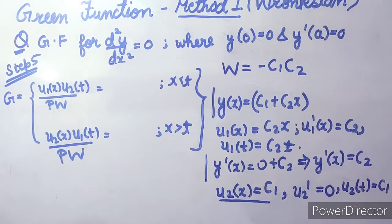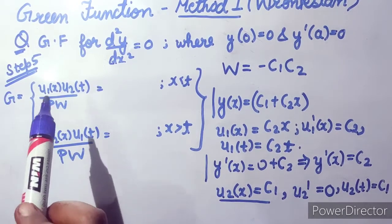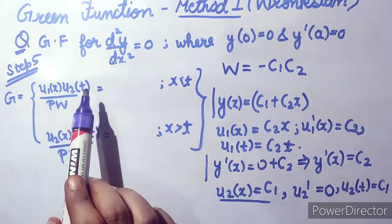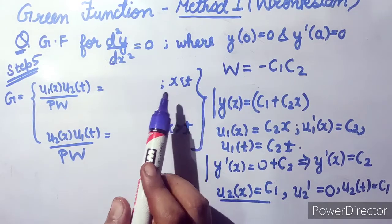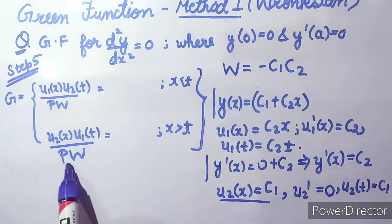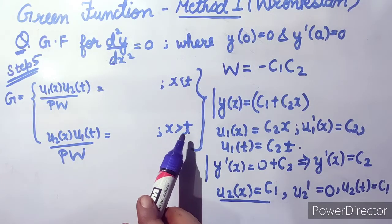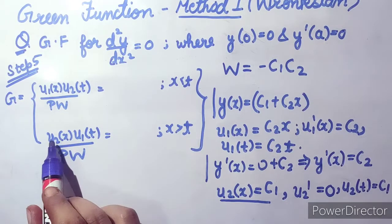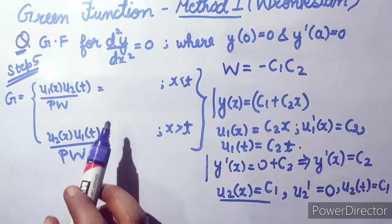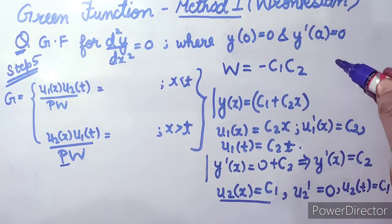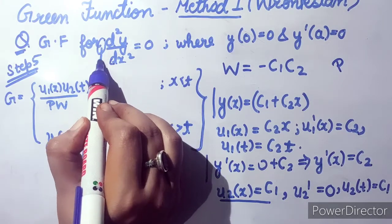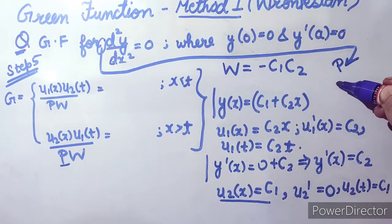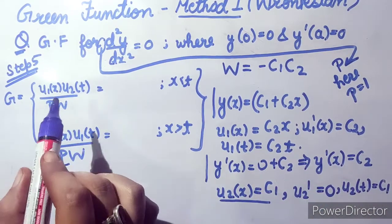In the last step, we find the Green function using the formula. For x < t, the Green function is u1(x)·u2(t) / (p·W), and for x > t it is u2(x)·u1(t) / (p·W). Here, p is the coefficient of d²y/dx² in the differential equation. Since there is no explicit coefficient, p = 1.